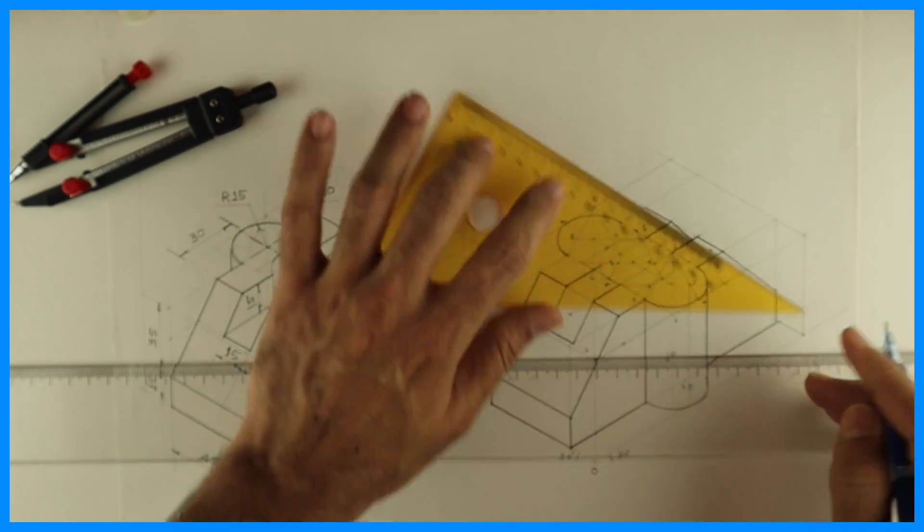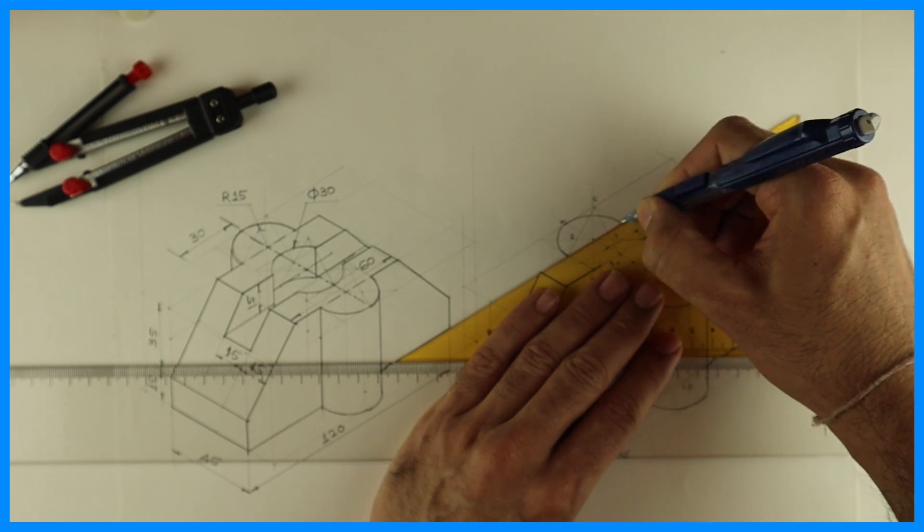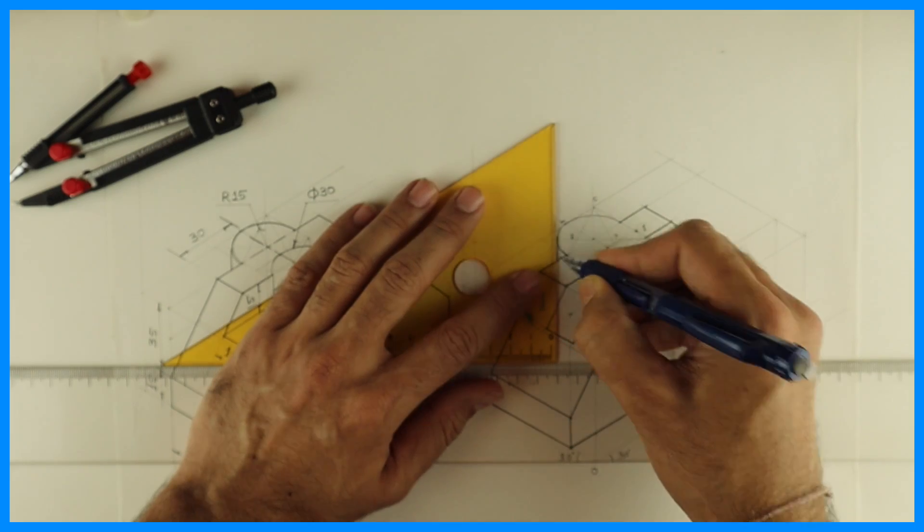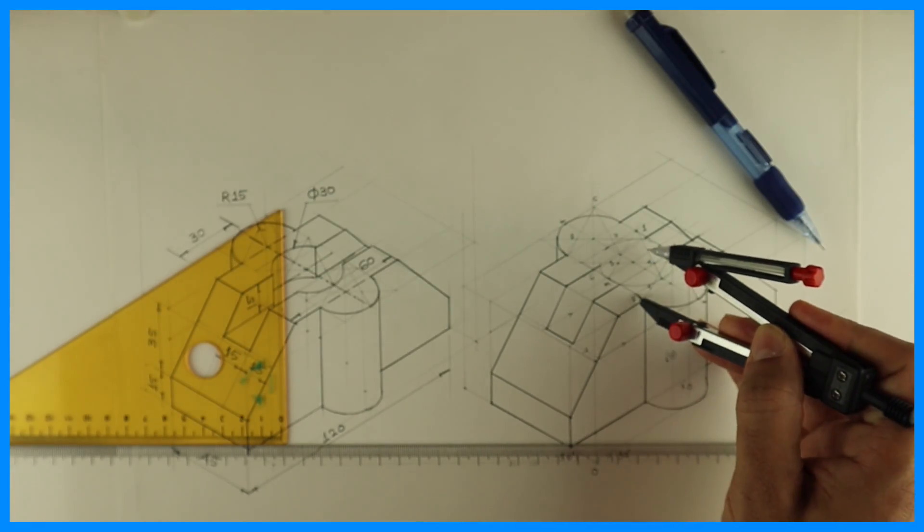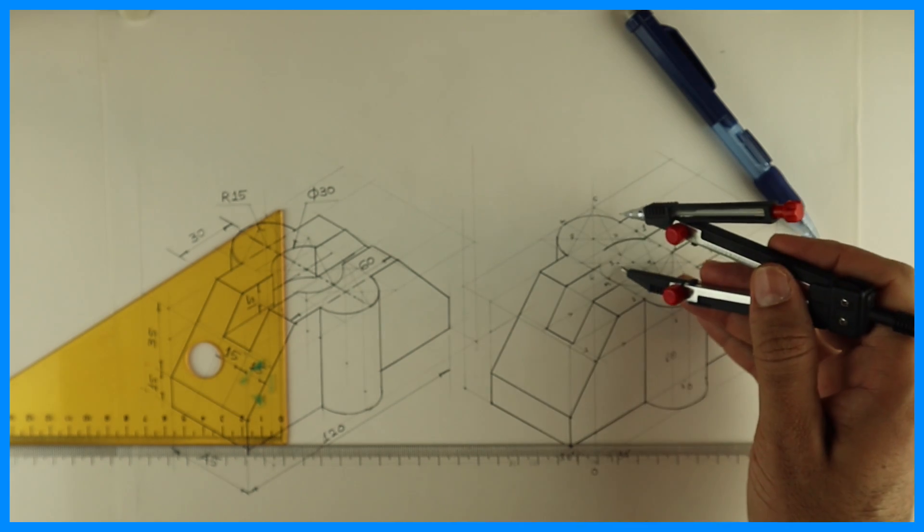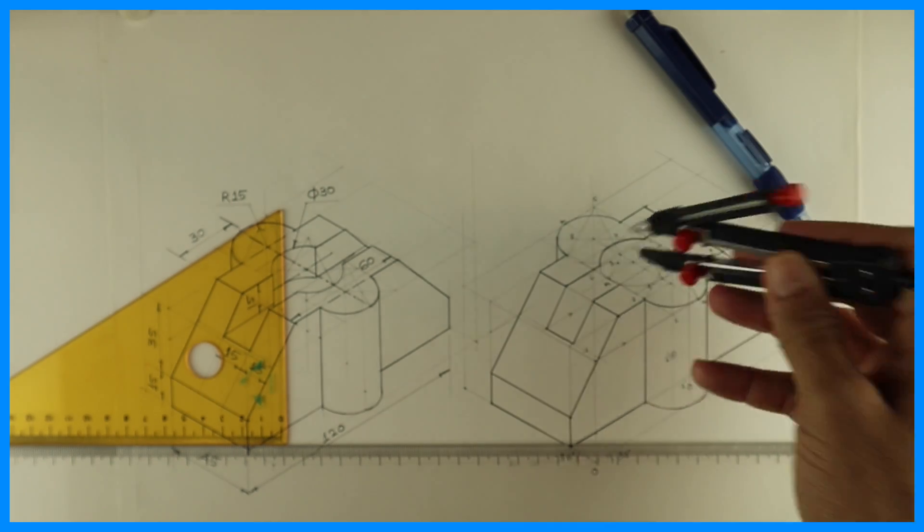We are darkening all these lines. This will be dark. Now see, the dark portion - only this much will be dark, not full circle. And this much will be dark.